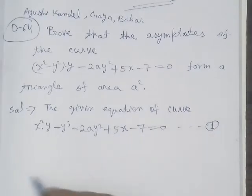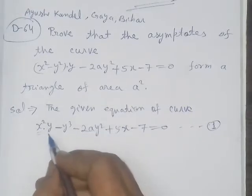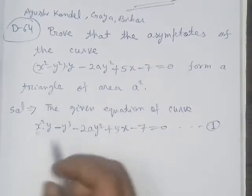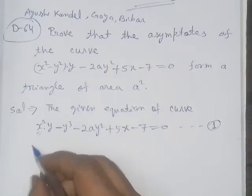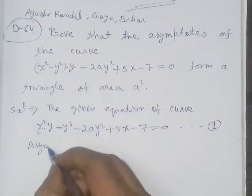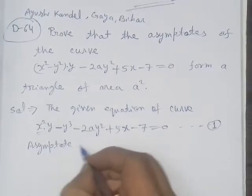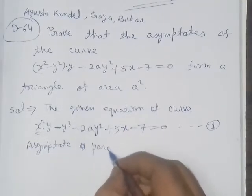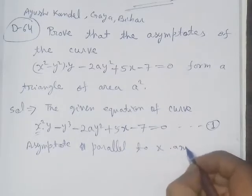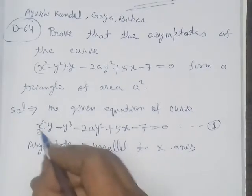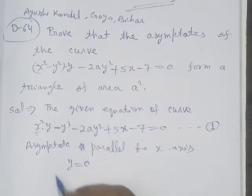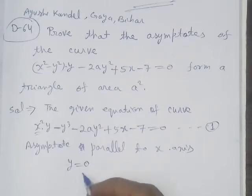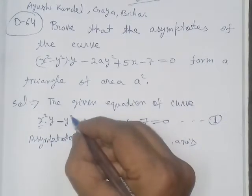First, we find oblique asymptotes. We check the highest power of x, which is 2, and its coefficient in y equals 0. So one asymptote is parallel to the x-axis. To find asymptotes parallel to the x-axis, we set the coefficient of the highest power of x to zero, giving y equals 0. So y equals 0 is one asymptote — this is the x-axis equation.